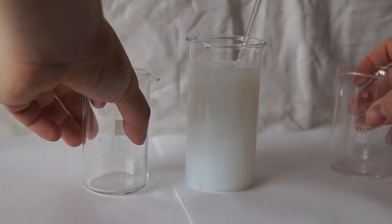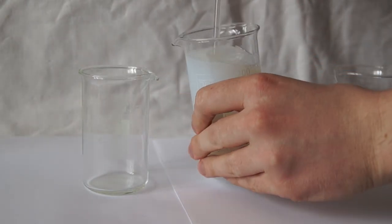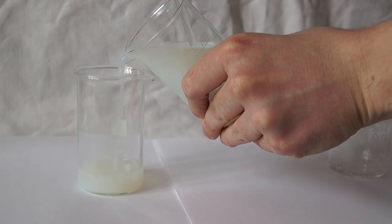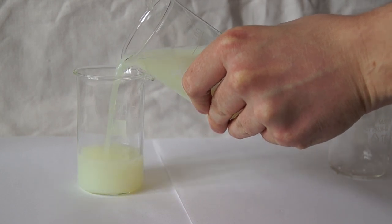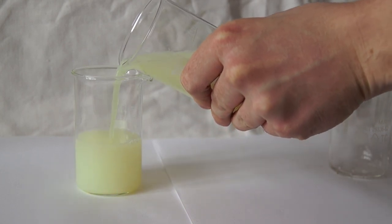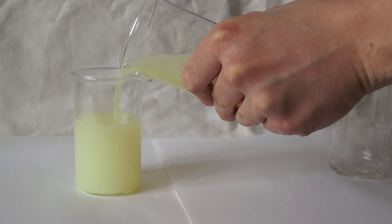And now we will try to pour this solution into another cup and see how the color will change. Here you can see that the solution first turns white and then it gradually turns yellow.